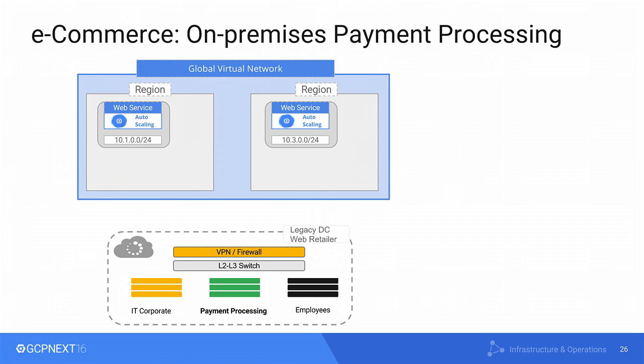The second scenario is a hypothetical e-commerce enterprise. They have their traditional data center but have set up their web services into GCP to leverage auto-scaling. However, in their data center they have customer-sensitive payment information, so they want to run their payment processing application from on-premises. In addition, they also have IT corporate systems and employee subnets on-premises. So, again, they want a secure connection to GCP and they use Cloud VPN for it.